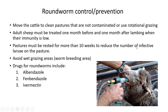To control roundworm infestation, farmers can move livestock to clean pastures where the feces are not contaminated, and rotational grazing should be used. If the farmer knows one pasture is affected, he must rotate every couple of months, using a different pasture so the worms die out without a host. Adult sheep must also be treated one month before and one month after lambing as a preventive measure.